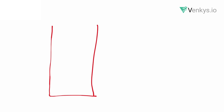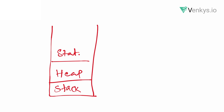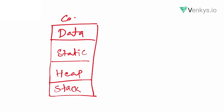Within that one MB of memory, what is there for you? At the bottom you have the stack, then on top of it you have the heap, above that you have static, above that you have data, and finally your code section. This is how your programs are organized in memory.